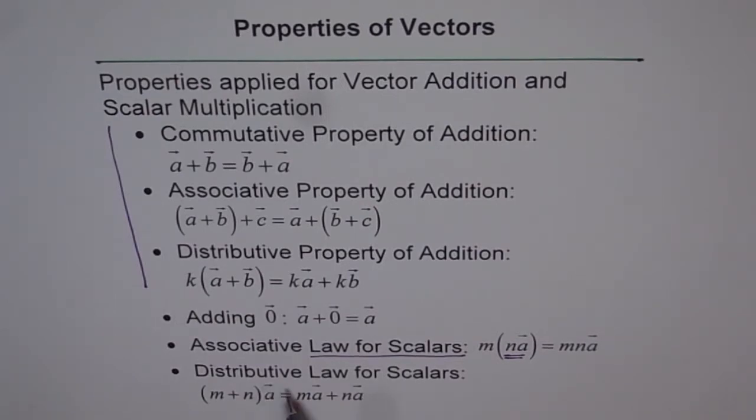And then we have distributive law for scalars. So what is happening here is these are two scalars, M and N. These are scalars, and that is why it is called distributive law of scalars. And they become M plus N. M plus N is a scalar times the vector A equals to M times scalar product of M with A plus N with A. Note that these two properties here have a different name. They go with law for scalars rather than property of addition.